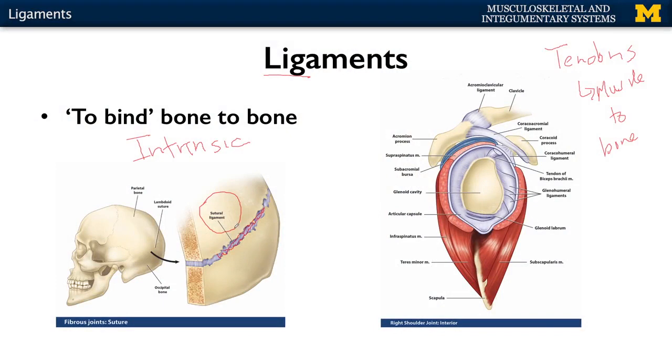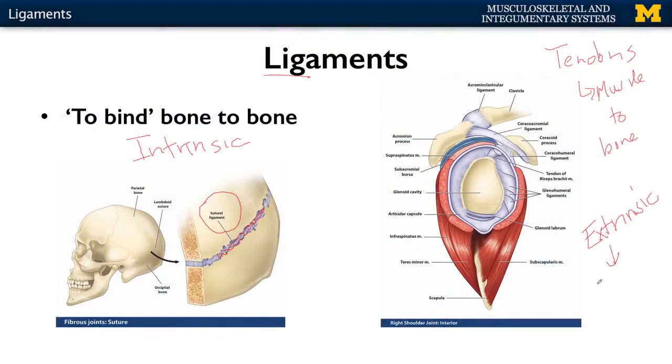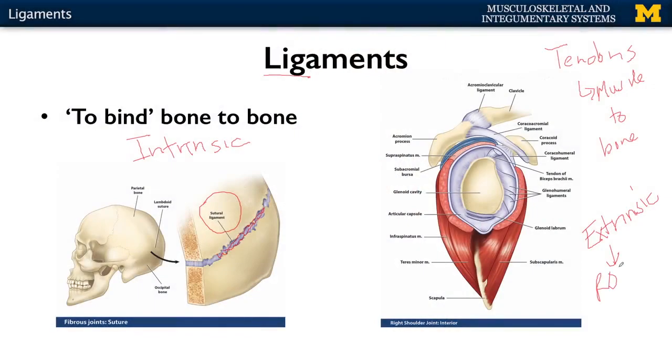Or you can also have what's referred to as extrinsic ligaments. They generally are found connecting different areas of the bone, and they're very important in terms of controlling range of motion.